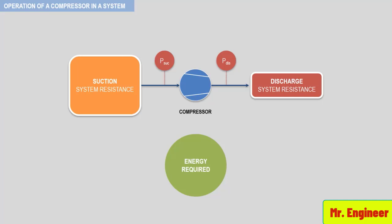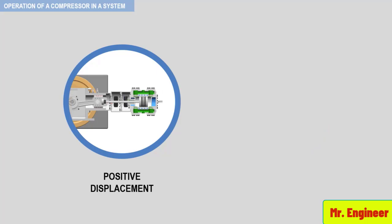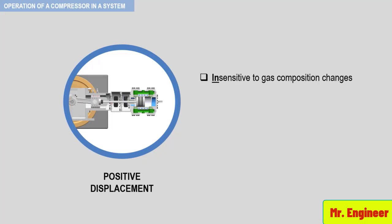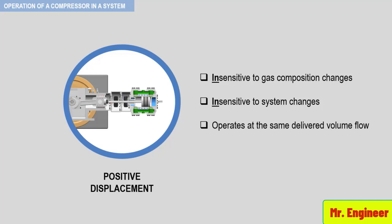If we review the previous section and examine the operation of both positive displacement and dynamic compressors in a simple system, two important facts become evident. A positive displacement compressor, since it increases the energy of the gas by operating on the gas in a confined space, will always increase the energy provided sufficient power is available. Therefore, a positive displacement compressor will be relatively insensitive to gas composition changes. In addition, since it has variable head capability, it will be relatively insensitive to system changes. As a result, a positive displacement compressor will operate at approximately the same delivered volume flow, regardless of system resistance or gas composition.